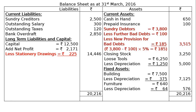Totaling both liabilities and assets, the total liabilities come to rupees 20,216. The asset side has already been totaled and both sides match. This is the final answer for the trading and profit and loss account and balance sheet.